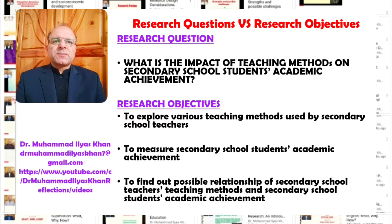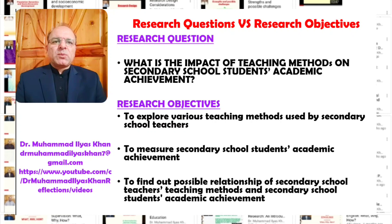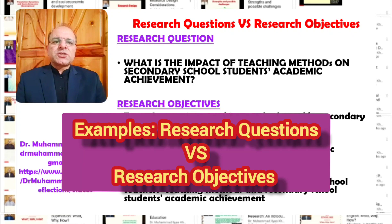Here is a bigger research question: What is the impact of teaching methods on secondary school students' academic achievement? In order to respond to this question, we can formulate a set of objectives: first, to explore the various teaching methods used by secondary school teachers; second, to measure secondary school students' academic achievement; and third, to find out the possible relationship between secondary school teachers' teaching methods and secondary school students' academic achievement.